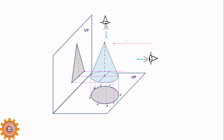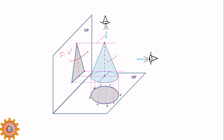What is the solid? The base is a circle. This is the circuit, these are the generators, this is the axis. This is the front view, this is the top view, and this is the reference line.